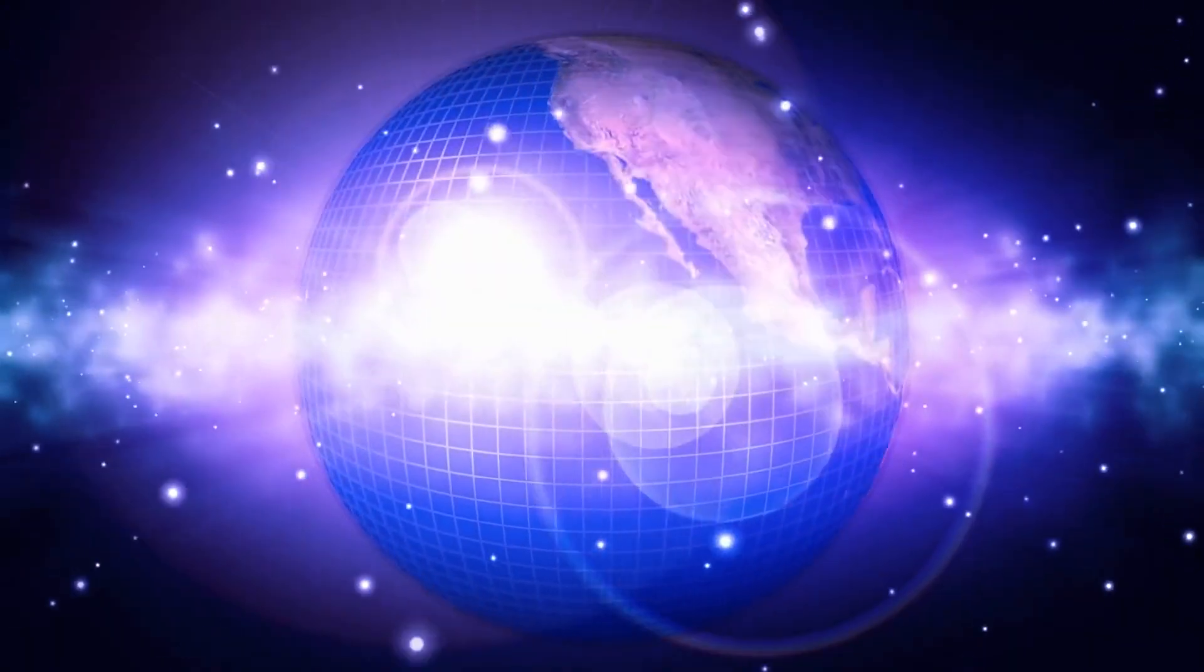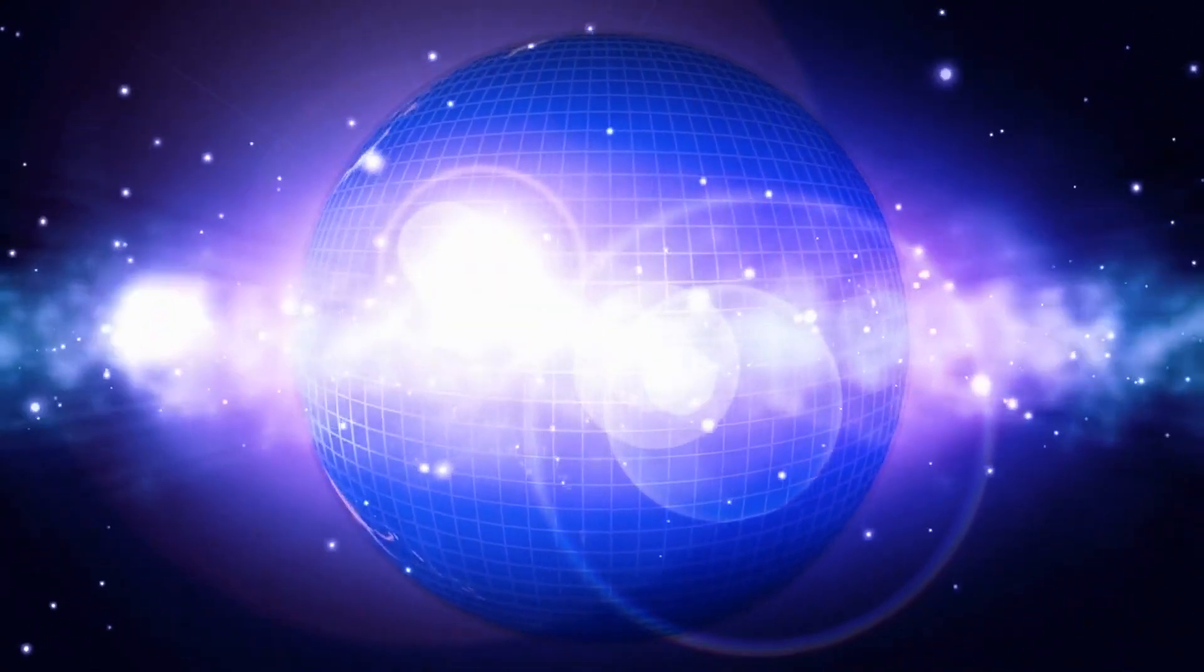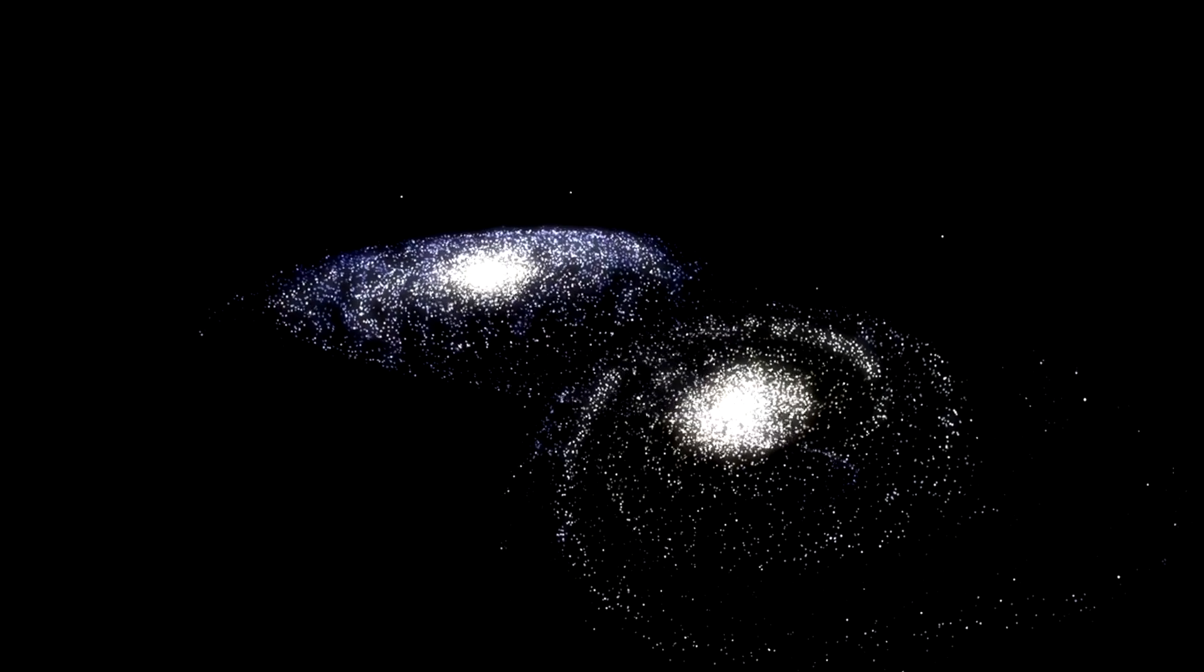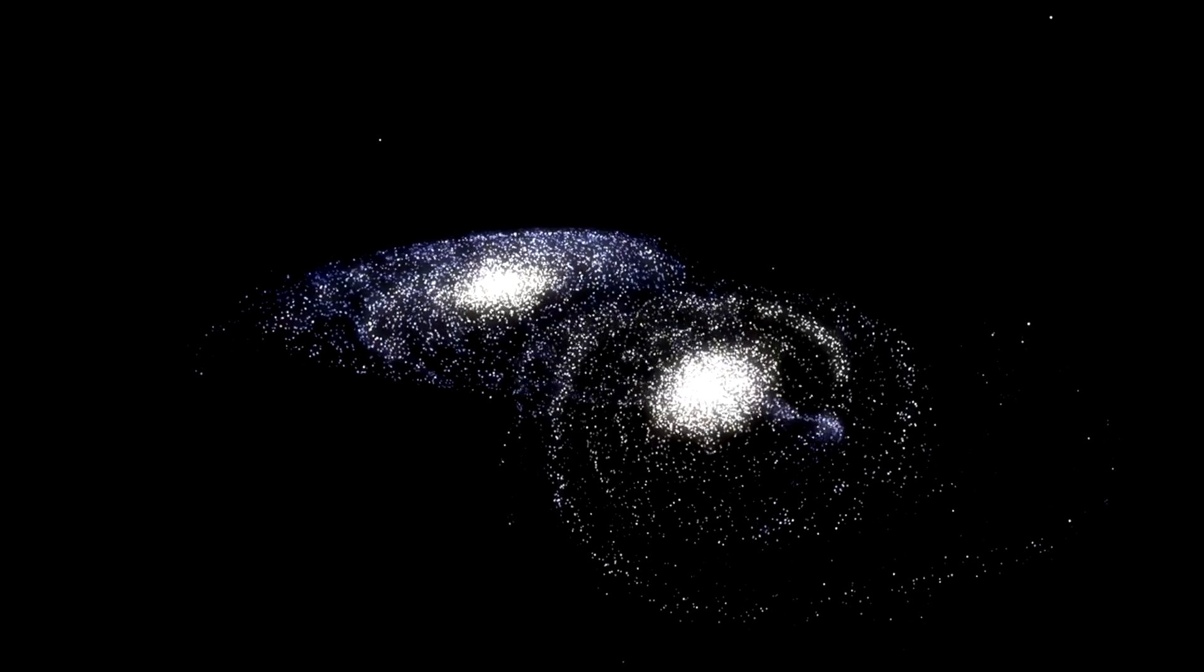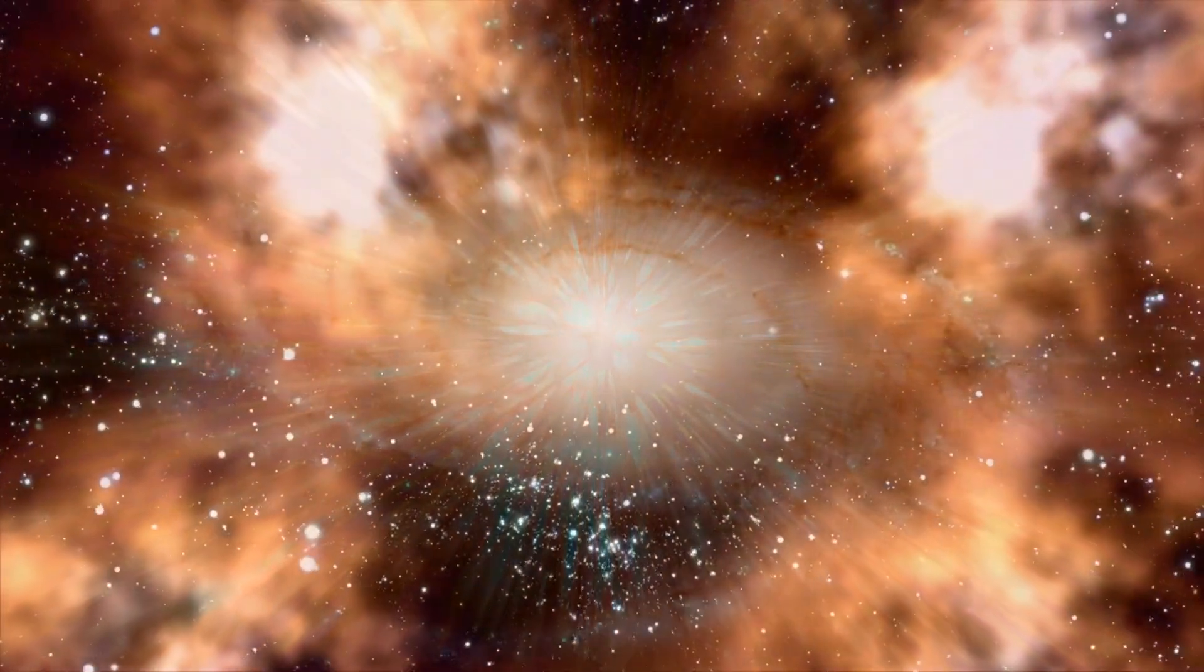But the universe never ceases to amaze. Among the many wonders of the cosmos, the Abel 3667 supercluster stands out as a particularly awe-inspiring phenomenon, located approximately 730 million light-years from Earth. This supercluster is a testament to the immense and often violent forces that shape our universe. Composed of two massive galaxy clusters that collided billions of years ago, Abel 3667 is a cosmic colossus, offering astronomers a unique glimpse into the dynamic processes that govern the evolution of galaxy clusters.